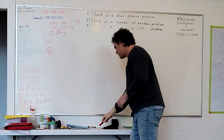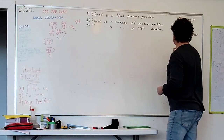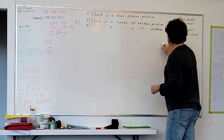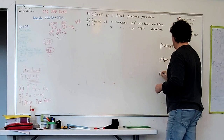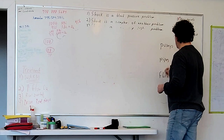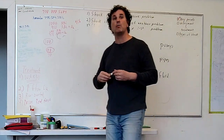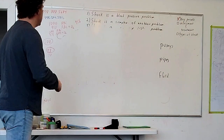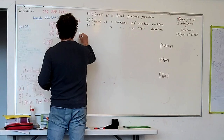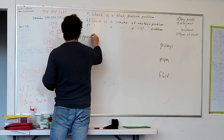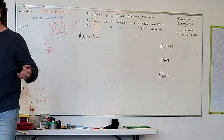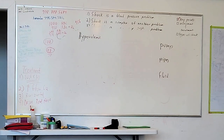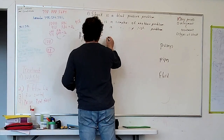Once again, if we're in shock we're looking at a pump, pipe, or fluid problem — one or more of those things. Hypovolemic shock, which we've discussed, is a fluid problem — all or some of the blood is in the wrong place. Pipes can compensate for that for a while through vasoconstriction.